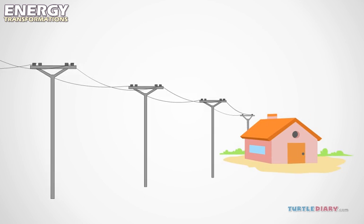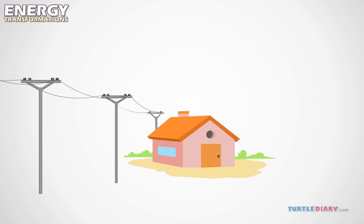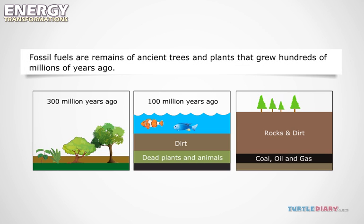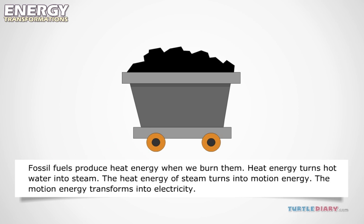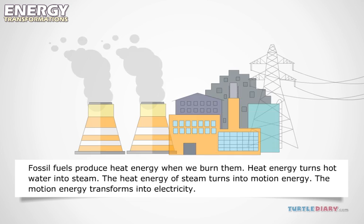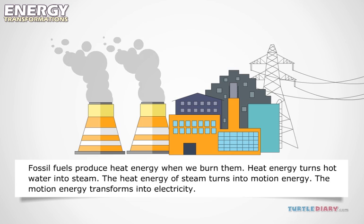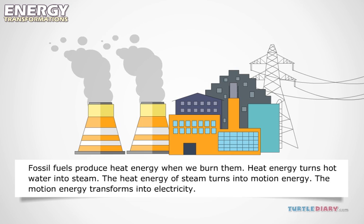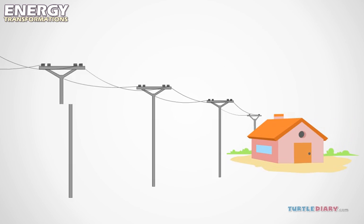Electricity also flows into our homes through wires. Most of it is made using fossil fuels. These are remains of ancient trees and plants that grew hundreds of millions of years ago. They turn into coal, oil, and gas. Fossil fuels produce heat energy when we burn them. That makes hot water turn into steam. The heat energy of steam turns into motion energy, and the motion energy transforms into electricity.